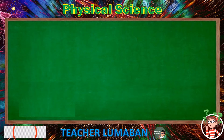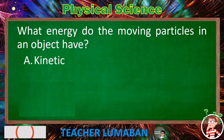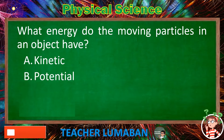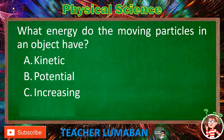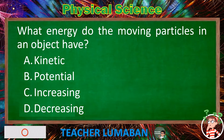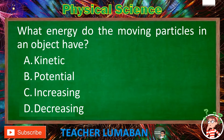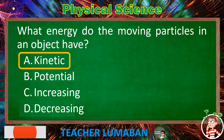What energy do the moving particles in an object have? Letter A: Kinetic. Letter B: Potential. Letter C: Increasing. Letter D: Decreasing. The correct answer is letter A, kinetic. The energy of moving particles in an object is kinetic energy.